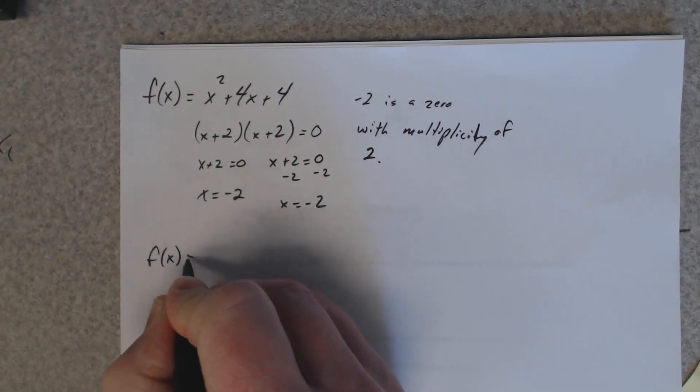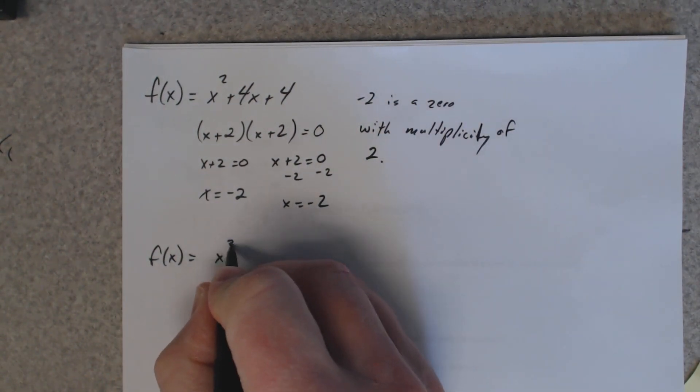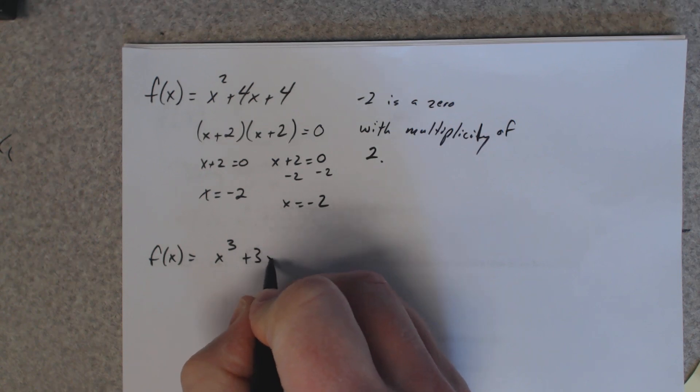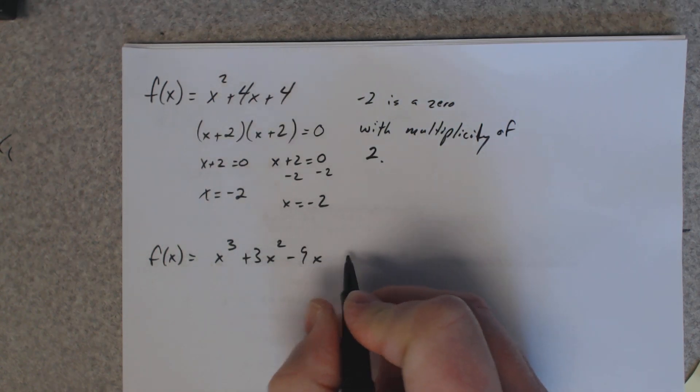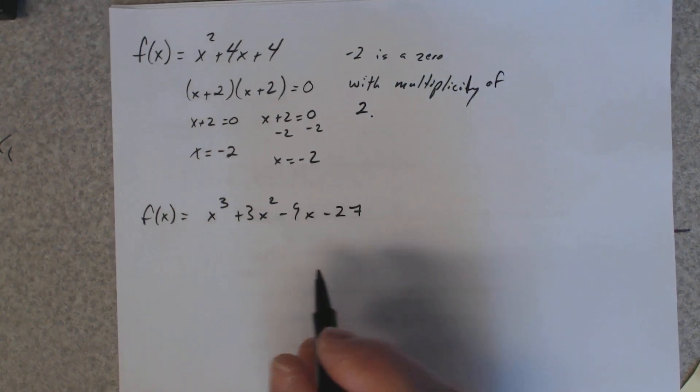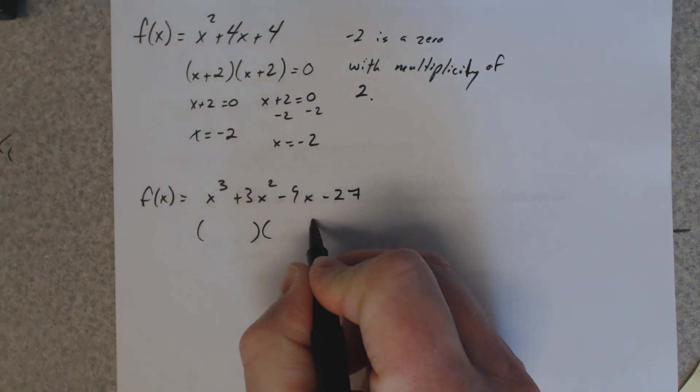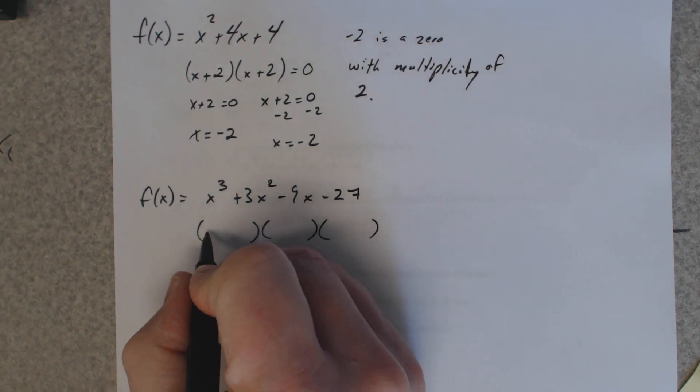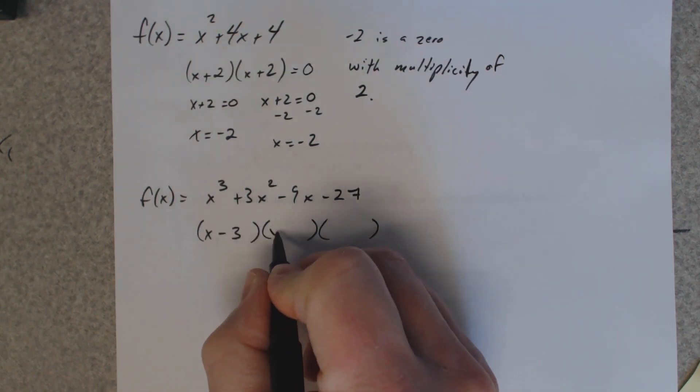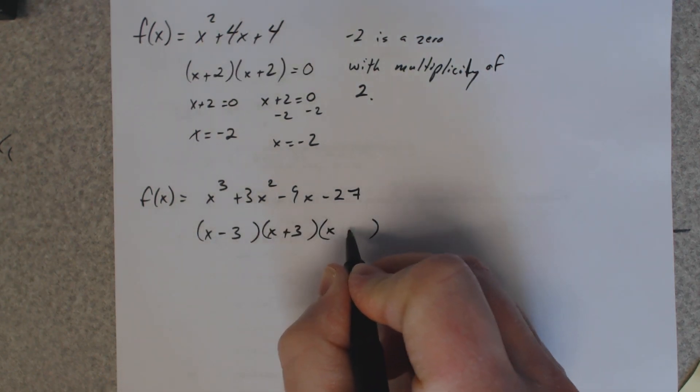Just another quick one. If I was to give you this long function here, x cubed plus 3x squared minus 9x minus 27, I'm not going to bore you with the factor by grouping, but if you factored this out, you'd wind up with x minus 3, x plus 3, x plus 3.